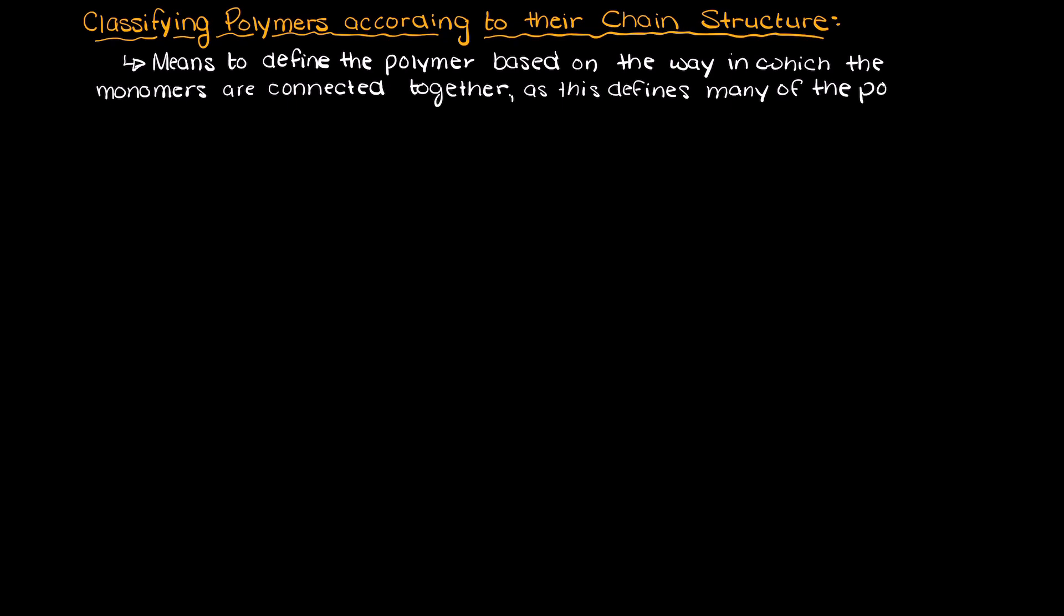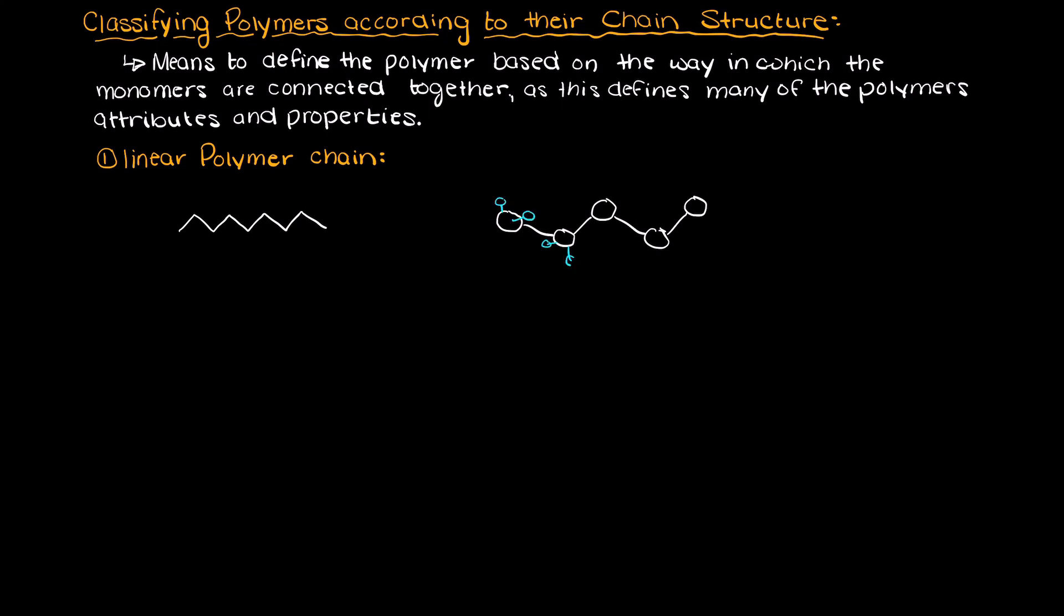So let's begin with the most simple and then we will work our way to more complicated chain structures. Firstly, we could have a linear polymer chain structure. In a linear polymer there are no branches off the main polymer. So a linear polymer will generally look like this and it makes sense as it is just a straight line of monomers.